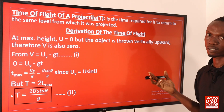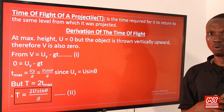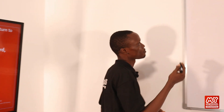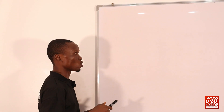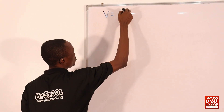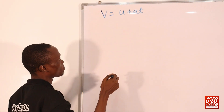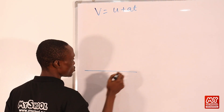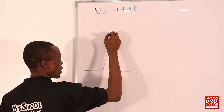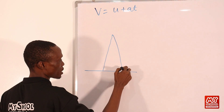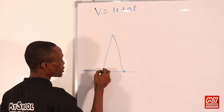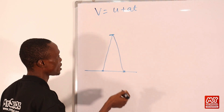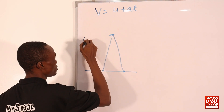Let's move to the board to derive the time of flight of a projectile. To derive it, we need the first equation of motion: v = u + at. The time of flight represents the total time from launch back to the same horizontal plane. The time taken to reach maximum height is denoted t_max.